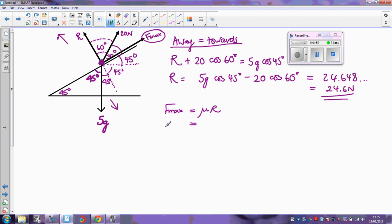Now we've already worked out what R is, so f max must be mu, we don't know that, multiplied by, and I'm going to use the exact value here, so that's the 5g cos 45 minus 20 cos 60. Now I also know this is in equilibrium, so the forces acting up the slope must equal the forces which are acting down the slope, same as any old equilibrium.